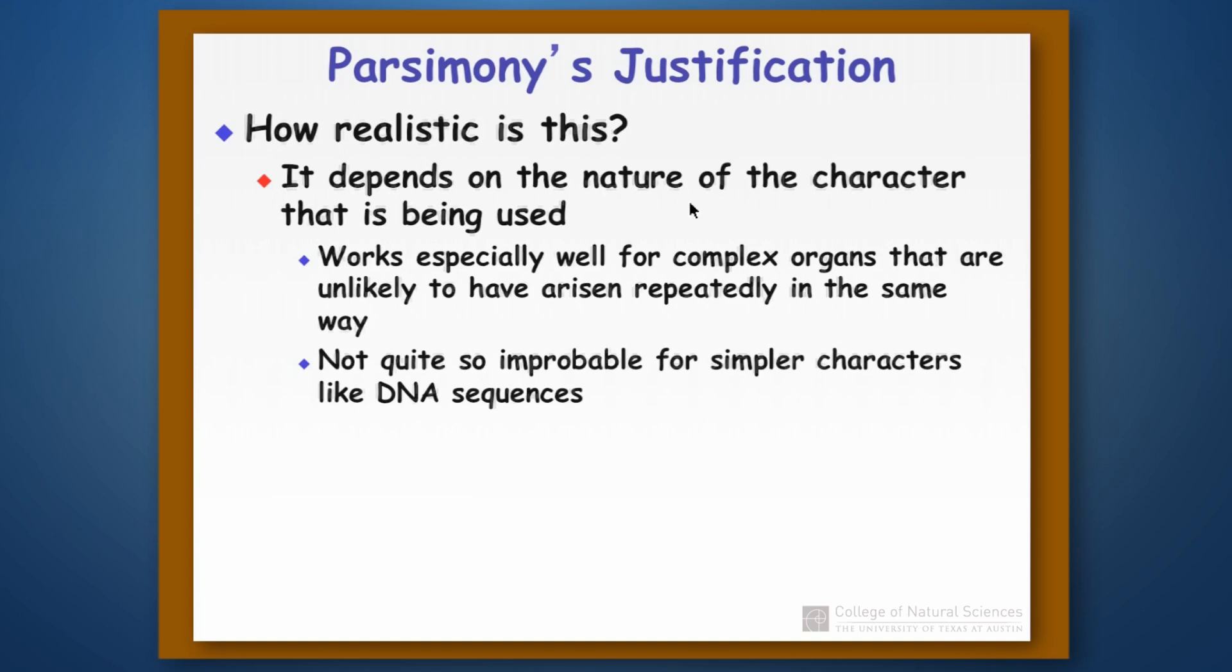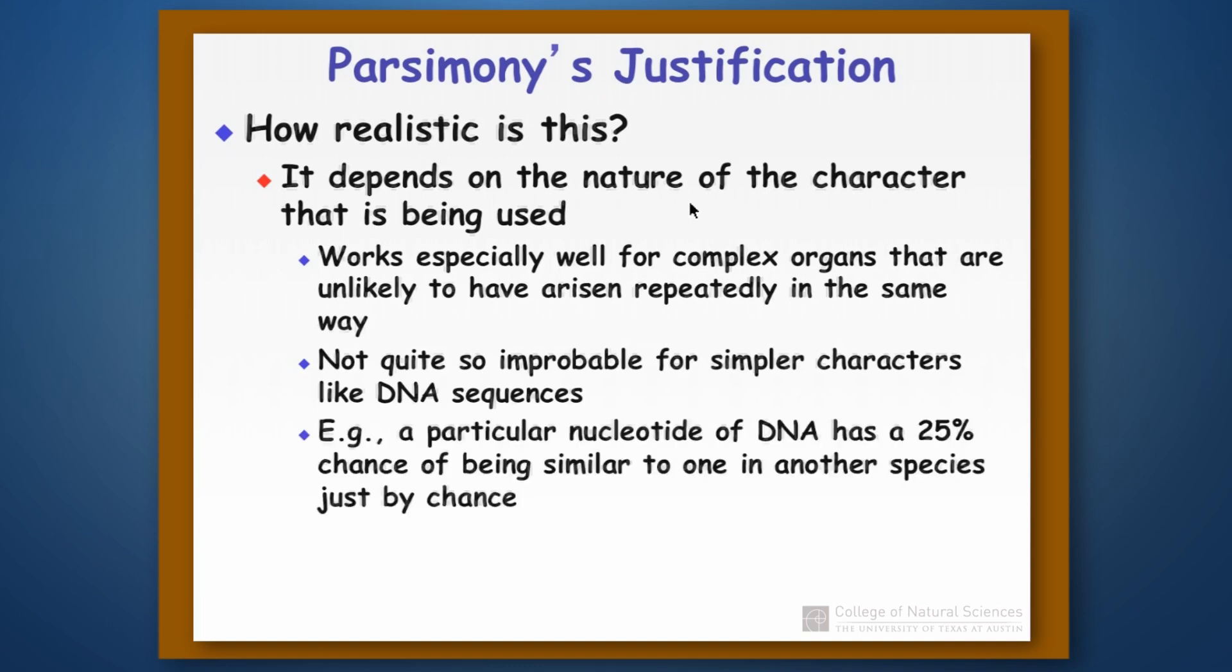It's not quite so good if you're working with simple characters like DNA sequences, and the reason for that is pretty straightforward. Remember, DNA only has four bases, and so the probability of two bases being the same just by chance is literally 25% because there's only four different characters that can be at any one position in a DNA sequence.